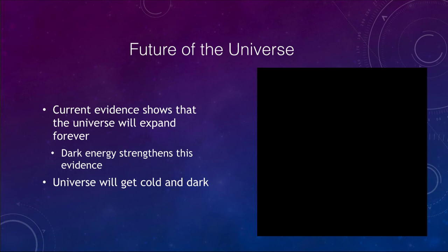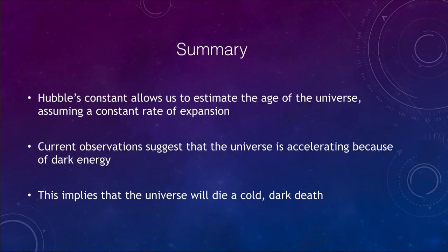Let's finish up with our summary. What we've learned is that Hubble's constant allows us to get an estimate of the age of the universe. We can estimate the age from Hubble's constant, but it does assume a constant rate of expansion, which we know is not true.